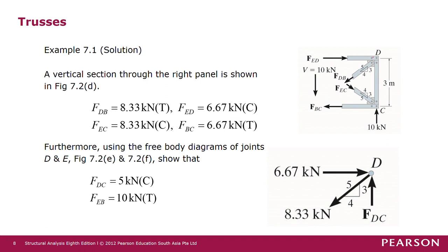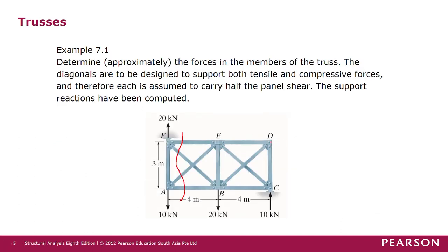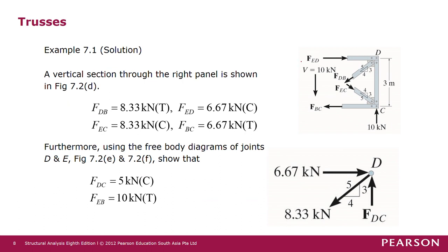Similarly, we can cut across for the other member forces in members ED, DC, BC, DB, EC, and EB. We isolate the right-hand side of the truss as a free body diagram, which gives a total panel shear of 10 kN as well. By using the similar method as presented for the first part of the analysis, we can obtain all the member forces. That is the end of the class for today.